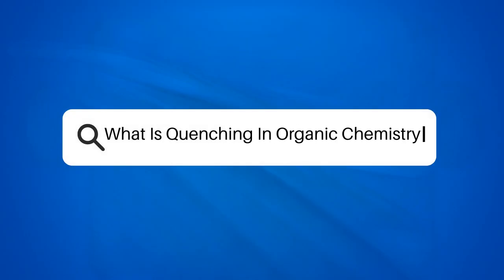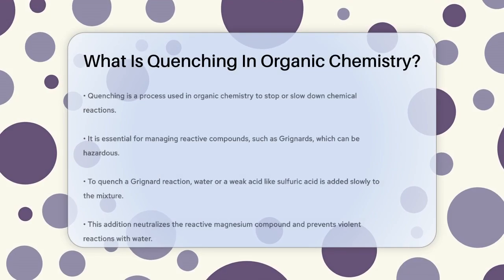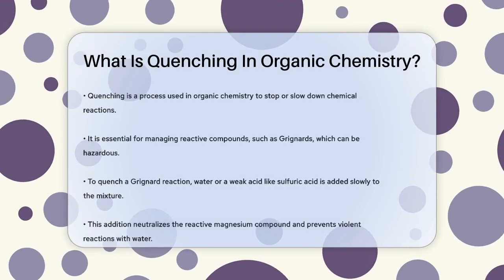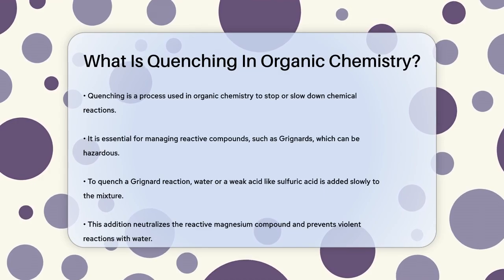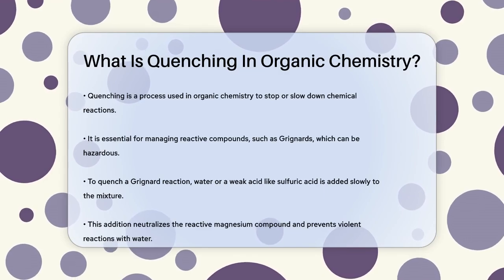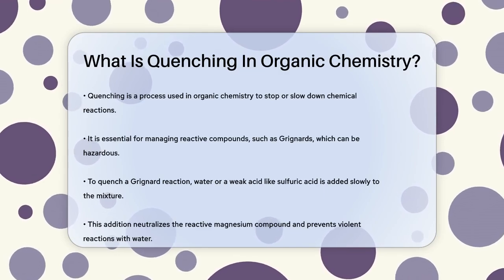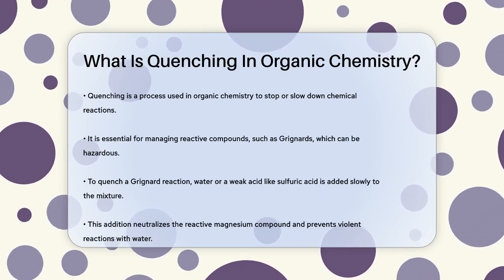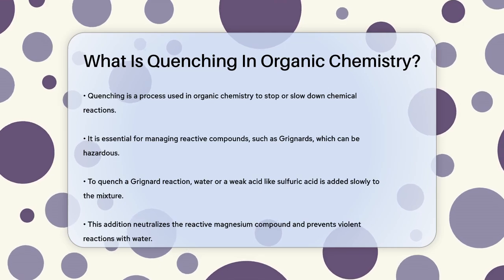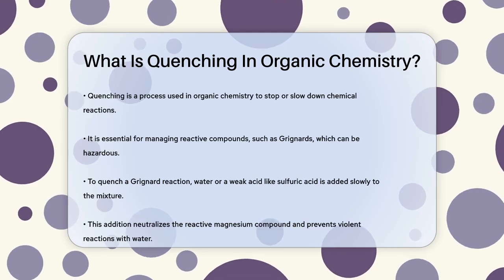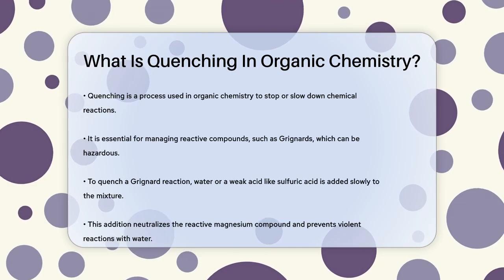What is quenching in organic chemistry? Imagine you're working in a lab and you have a chemical reaction that's getting too intense. You need to calm it down, or quench it, to prevent any accidents or unwanted outcomes. In organic chemistry, quenching is a process that stops or slows down a chemical reaction.